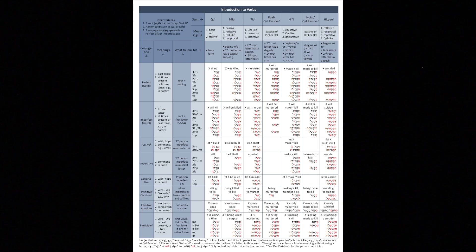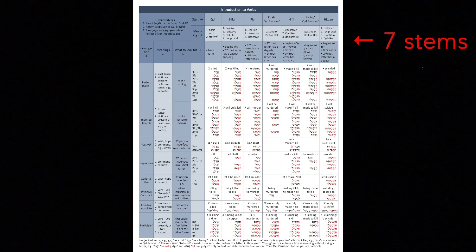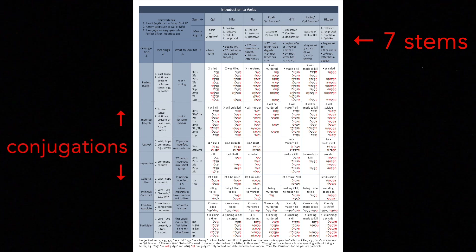I was able to give you not only all the seven different types of verbs — the seven stems — but I was also able to give you examples of each and every conjugation.